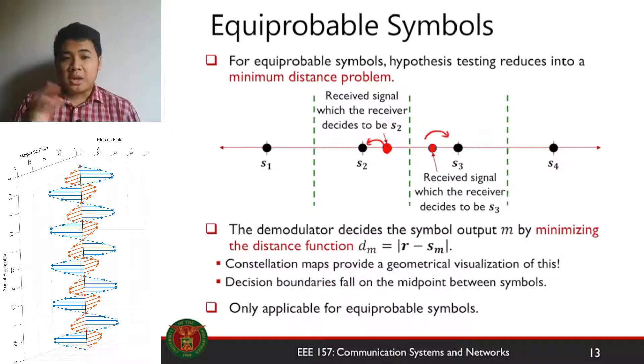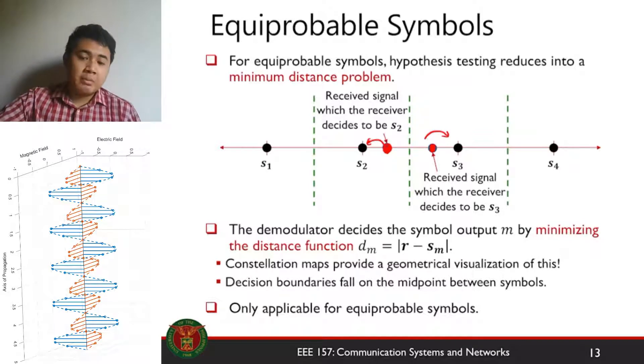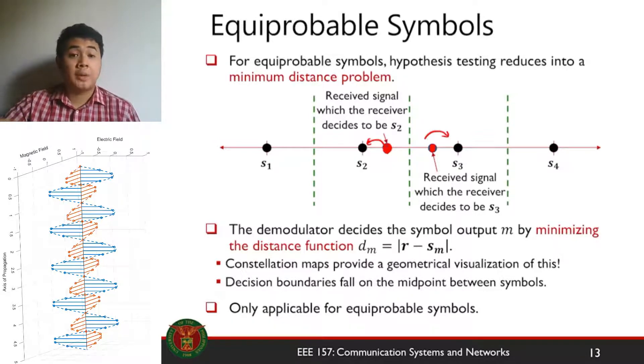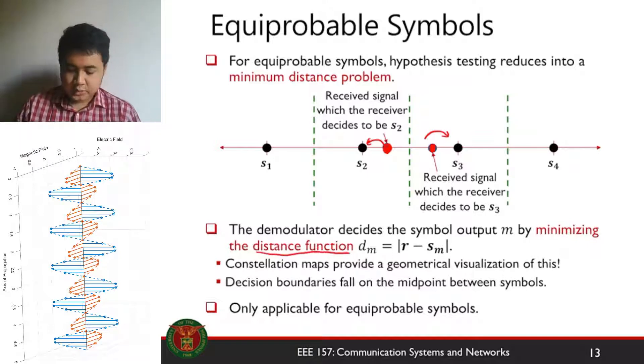Since we have mapped the symbols in some geometric plane, we're able to quantify or use an expression to detect your transmitted symbol based on your observation. In this case, since we're talking about the nearest symbol, the receiver decides the symbol by minimizing what we call the distance function. We are measuring the distance of the received symbol from a symbol M, S sub M. The S sub M that minimizes this distance is the output of your detector.